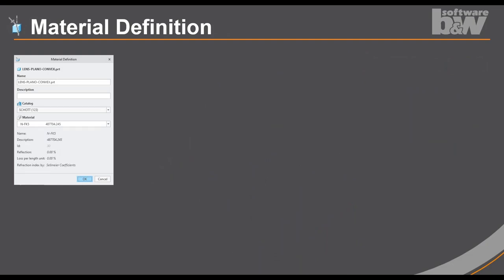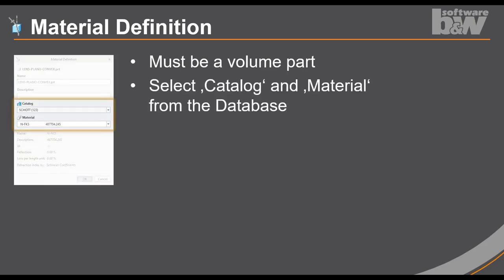The next point is the material definition. The material must be a bar part, and of course, it should have a volume inside. You select the catalog and material information from the database. Any information about the material is predefined in the database. So you only need to select the name of the material here.